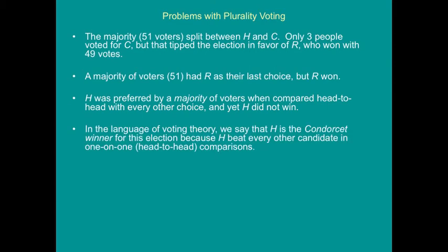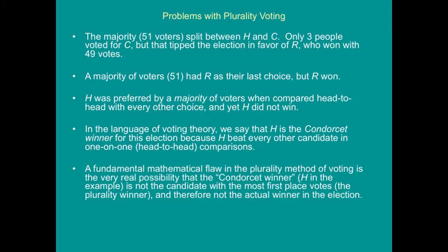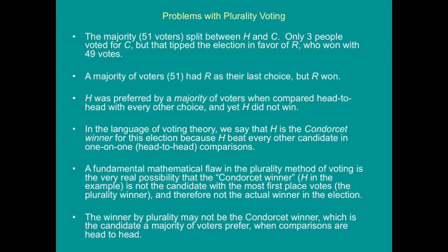In the language of voting theory, H is called the Condorcet winner because H beat every other candidate in one-on-one comparisons. A fundamental mathematical flaw in plurality voting is the real possibility that the Condorcet winner is not the plurality winner — the candidate with the most first-place votes. The winner by plurality may not be the Condorcet winner, which is the candidate a majority of voters prefer in head-to-head comparisons. That's a summary of the key flaws of plurality voting.